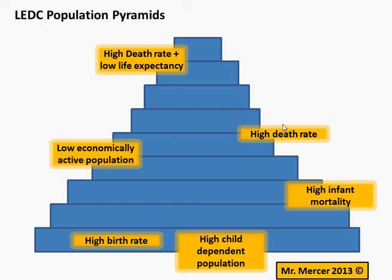Moving on to the high death rate: we have a high death rate because of high rates of disease, poor sanitation, poor access to health care, perhaps more likelihood of war or conflict in LEDCs, and poor nutrition meaning poor resistance to disease. There are four or five reasons for a high death rate. As you can see, four reasons for the death rate, four for the birth rate, plus the descriptions — that math adds up very easily into a strong answer. This kind of question should be bread and butter for you, so make sure you understand it.